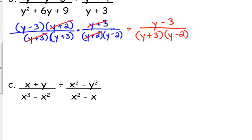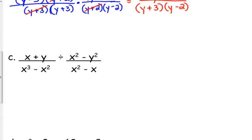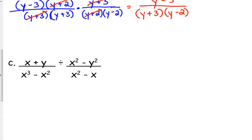Let's look at example C. No numbers except for our x. But it's okay. We can handle that. The first numerator, there's nothing to be done there, so we leave it as x plus y.